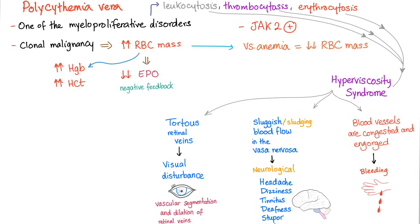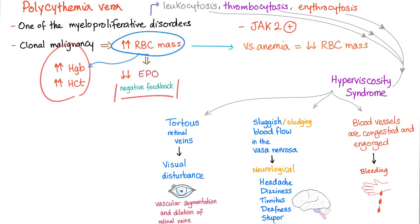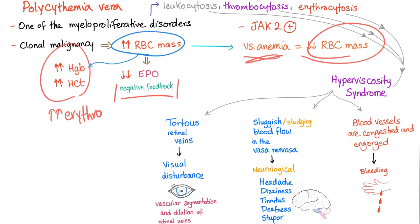We have JAK2 kinase mutation — this clonal malignancy increases red blood cell mass. One of the three cell lines is dominant, and in polycythemia vera it's the red blood cell, leading to decreased EPO via negative feedback. This leads to increased hemoglobin, hematocrit, and erythrocyte count — more than 5 million, for example.